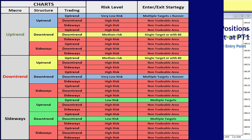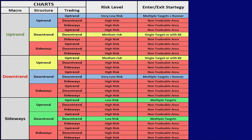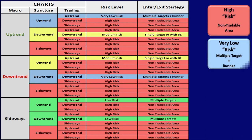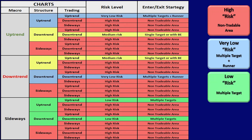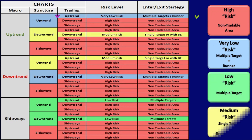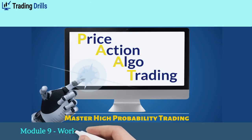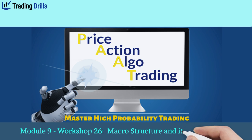So, let's use real market data to update the dynamic channel of the macro structure and evaluate the risk and reward potentials under various scenarios when the structure and trading charts show high probability trading areas. Let's take a look at the next slide.